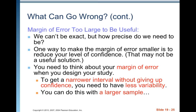Margin of error can be too large to be useful. We can't be exact, but we need sufficient precision. For example, if a weatherman said it'll be between -22°F and 104°F today, that's technically a valid interval but useless. One way to reduce margin of error is to lower your confidence level, but that may not be acceptable. The real solution to getting a narrower interval without giving up confidence is to reduce variability — and you can do this with a larger sample.